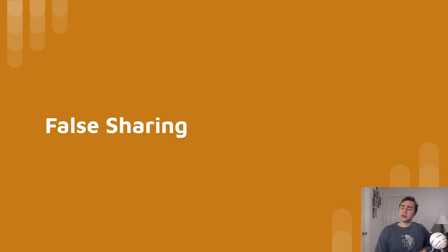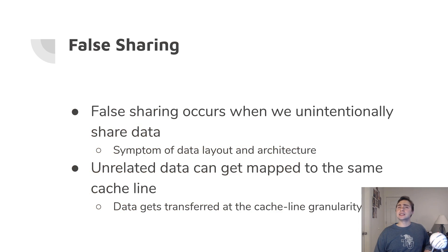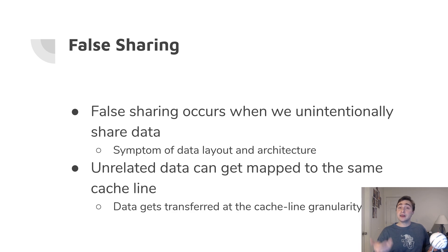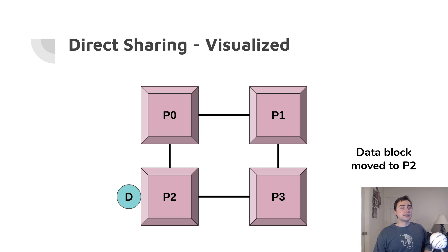False sharing is another type of sharing that's less intuitive than direct sharing. With direct sharing, we knowingly have a common data structure. With false sharing, we're unintentionally sharing data — it's usually a symptom of data layout and architecture. This occurs when unrelated data gets mapped to the same cache line. When that happens, while we may have one integer on a cache line needed by one processor, we might unintentionally grab 15 other integers and bring the whole cache line over, invalidating it in the other processor's cache — because that processor is doing the write and will update the value, making whatever is in P0 no longer valid.